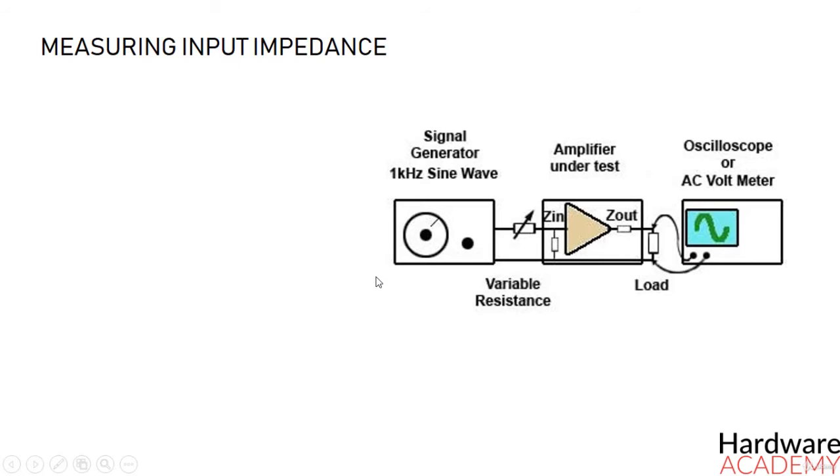It is quite possible, however, to measure input and output impedance at any frequency using a signal generator, an oscilloscope, and a variable resistor.